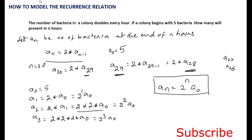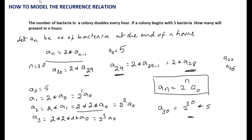Using this solution, to find the count after 30 hours we no longer need to calculate a(29) or a(28). Directly, a(30) = 2³⁰ · a₀ = 2³⁰ × 5. This gives the count of bacteria after 30 hours.